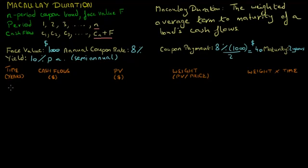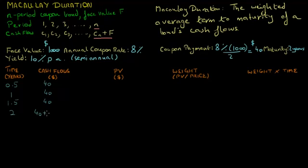Since the bond pays semi-annual coupons, given the time in years: the first coupon payment is made in half a year, the second coupon payment comes in one year's time, the third coupon payment is made in a year and a half, and the final coupon is paid out along with the face value of the bond at the end of year 2. Each coupon payment is $40, but the final cash flow includes the $40 coupon plus $1,000 face value, which equals $1,040. We want to calculate the present value of these cash flows given the yield of 10% per annum with semi-annual compounding.